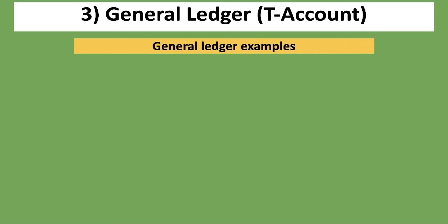Welcome to Counters. In this lesson we're going to be looking at the general ledger or T-accounts. This is part three of our series on accounting for beginners. In part one we looked at the accounting equation and identified assets, equity, and liabilities. In part two we looked at the general journal and did journal entries. If you have not checked out parts one and two, I would strongly encourage you to do so before continuing.